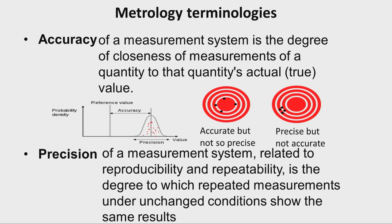However, the process is not so precise because of the scattering of the measured points. In a second picture, all the measured points are very close to each other, but when we calculate the average there is a gap between the target value and the average value. So we say this measurement system is precise, but not so accurate.